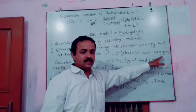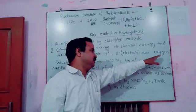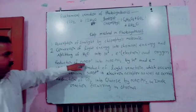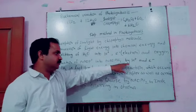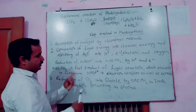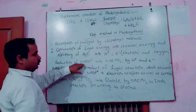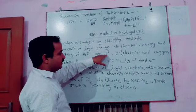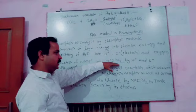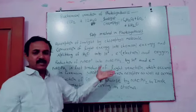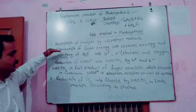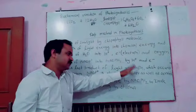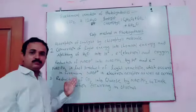The oxygen released in this step flows into the atmosphere and all organisms depend on this oxygen. In this step, NADP+ is reduced to NADPH2 by receiving H+ ions and electrons. NADP is an organic compound that acts as an electron acceptor and electron carrier. NADPH2 is the final product of the light reaction, which occurs in the granum — a part of the chloroplast found in leaf cells.